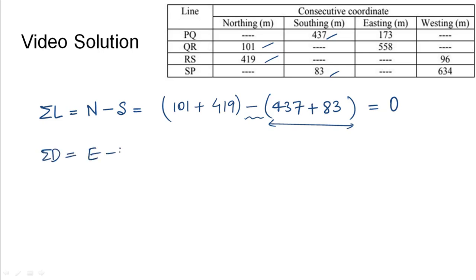This would give out the final value of summation of latitude as 0. We will find the summation of departures as Easting minus Westing. Easting can be seen as 173 plus 558 for lines PQ and QR. For Westing we will consider the lines RS and SP that would be 96 and 634.